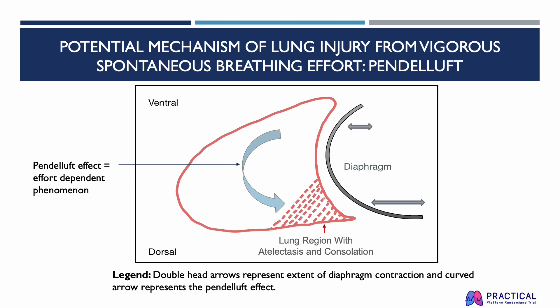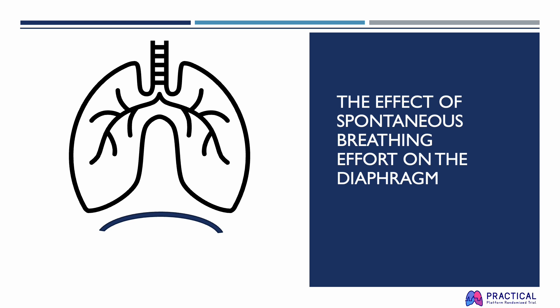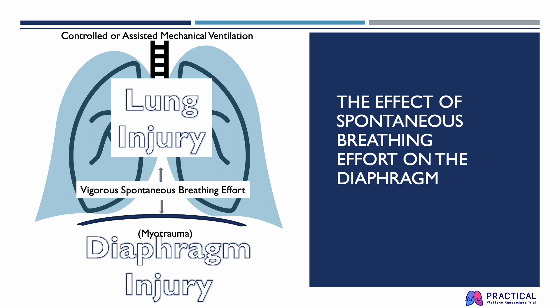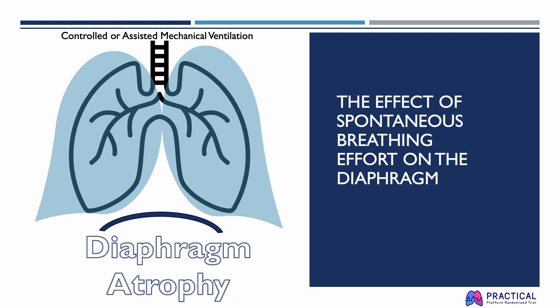It is important to note that this probably only occurs when spontaneous respiratory efforts are significantly elevated. During normal spontaneous breathing, the diaphragm muscle contracts and generates negative pressure in the pleural cavity to help expand the lungs and draw in air. When patients on mechanical ventilation have excessive spontaneous breathing efforts, this can cause lung injury and diaphragm injury, also called myotrauma. On the other hand, when patients have insufficient respiratory effort, this can cause diaphragm atrophy.